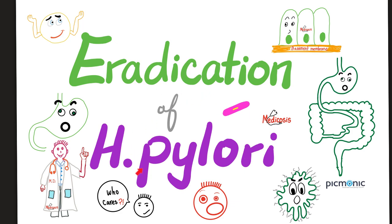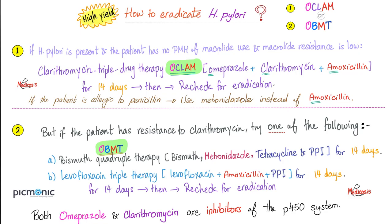How can I eradicate H. pylori? You have the triple regimen — three medications — or the quadruple regimen of four medications. Let's focus on the triple therapy: OCLAM. O is omeprazole, CL is clarithromycin, AM is amoxicillin.